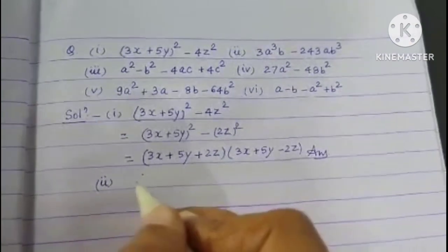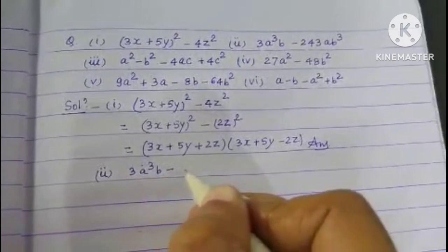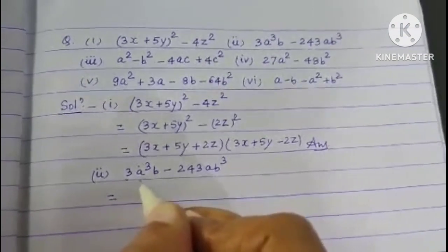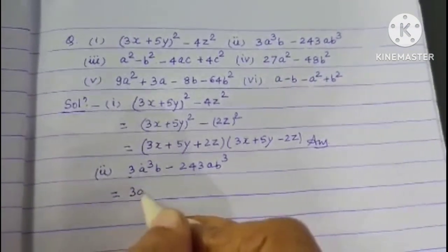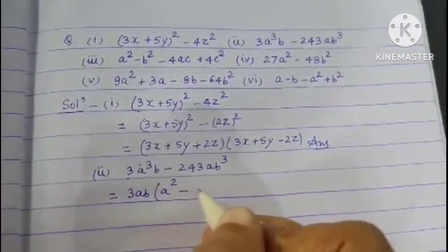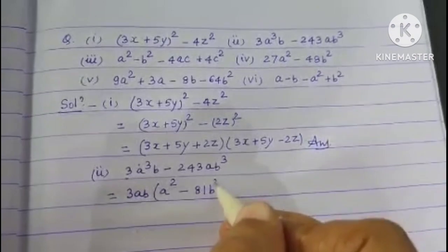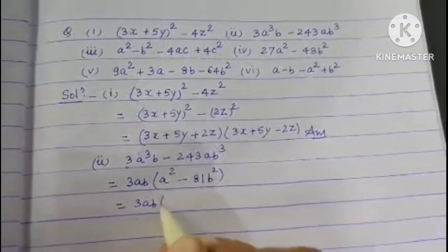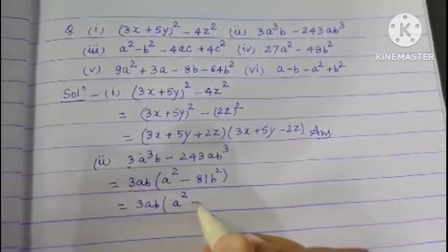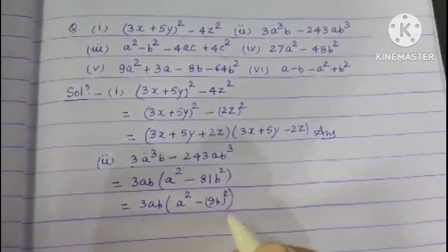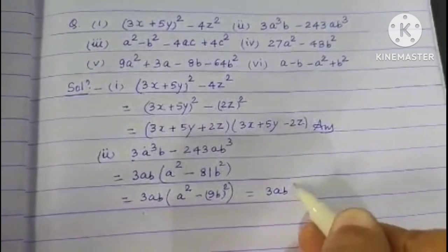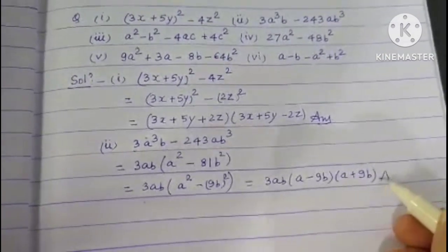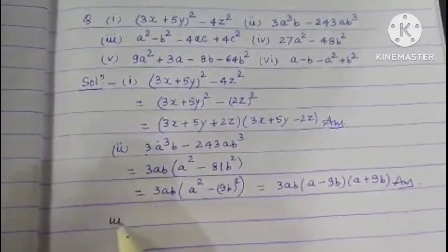Second question: 3a³b - 243ab³. Take 3ab common: 3ab(a² - 81b²). Now a² - 81b² = a² - (9b)², which is of the form x² - y². So we write 3ab(a + 9b)(a - 9b).